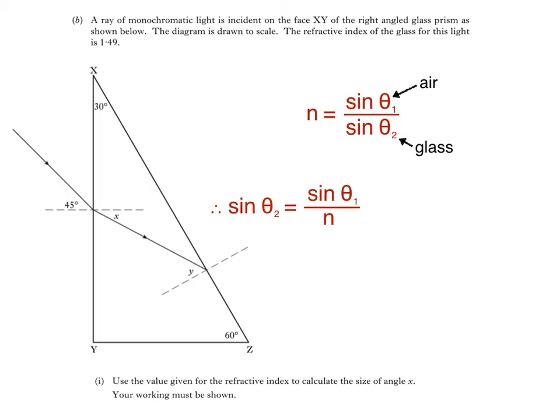Then substitute, which gives us sin 45 divided by 1.49, which equals 0.475. This is the sin of the angle in glass. So to find the angle, we calculate sin to the negative 1, 0.475, which equals 28.4 degrees.